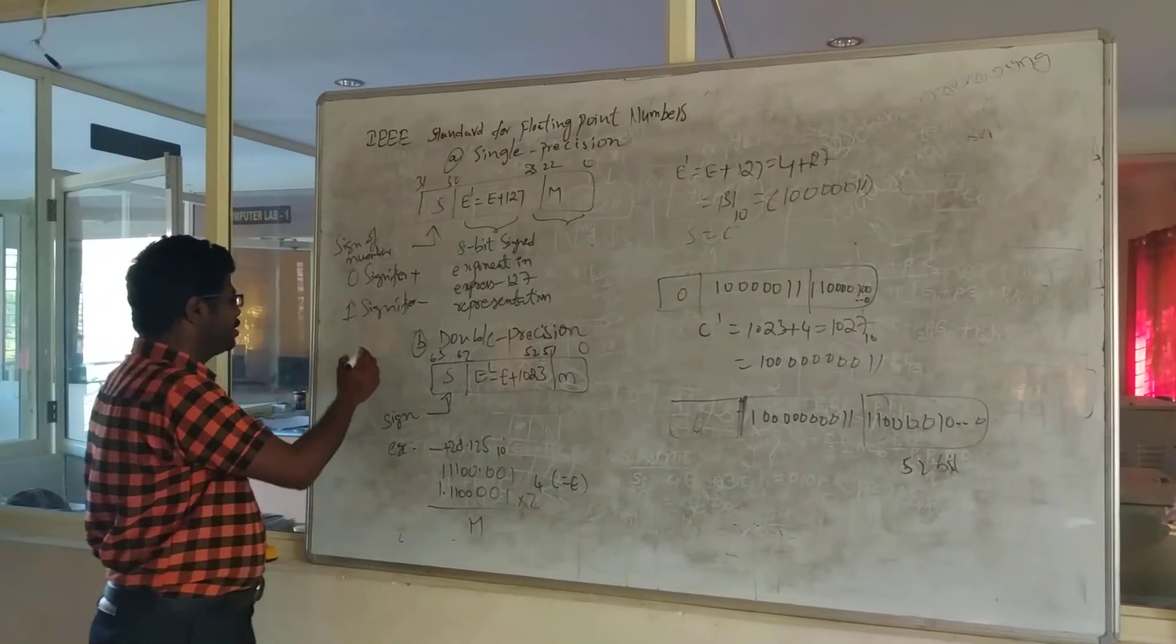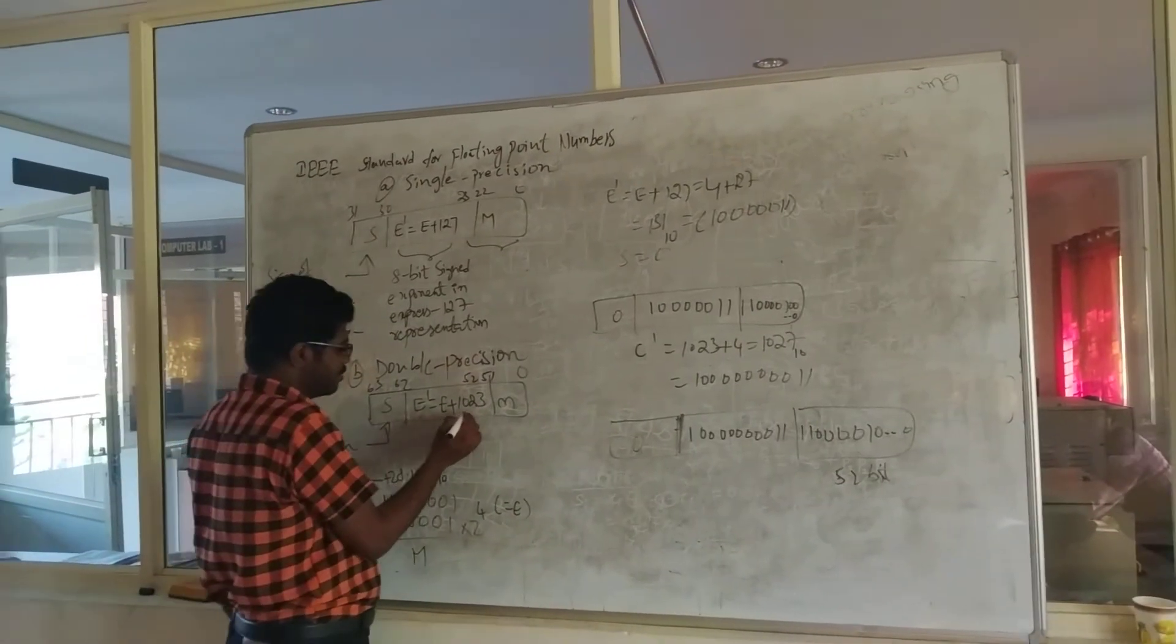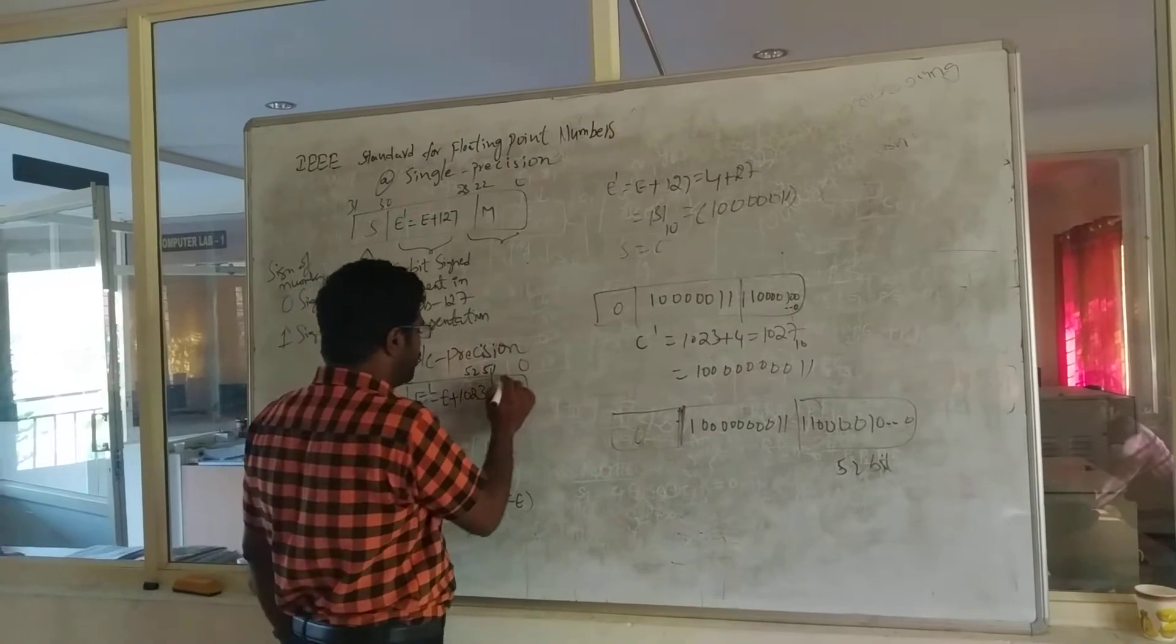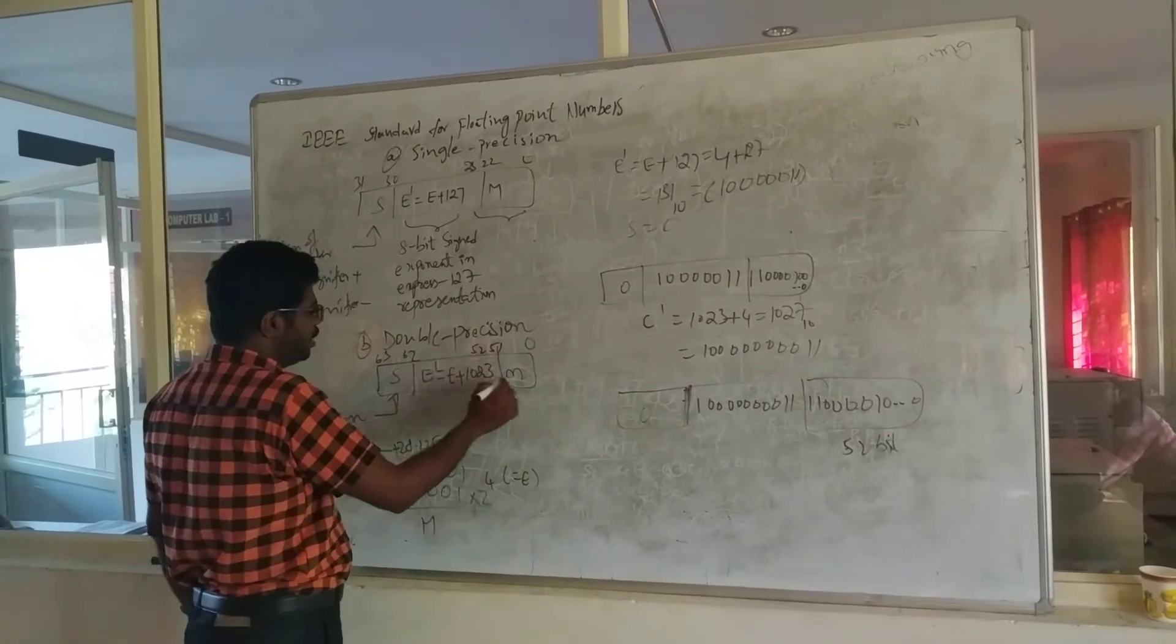And negative means represented by 1. Here followed by E', exponent equals E plus 1023. The remaining part is the mantissa bits, where it has 0 to 52 bits occupying the mantissa.